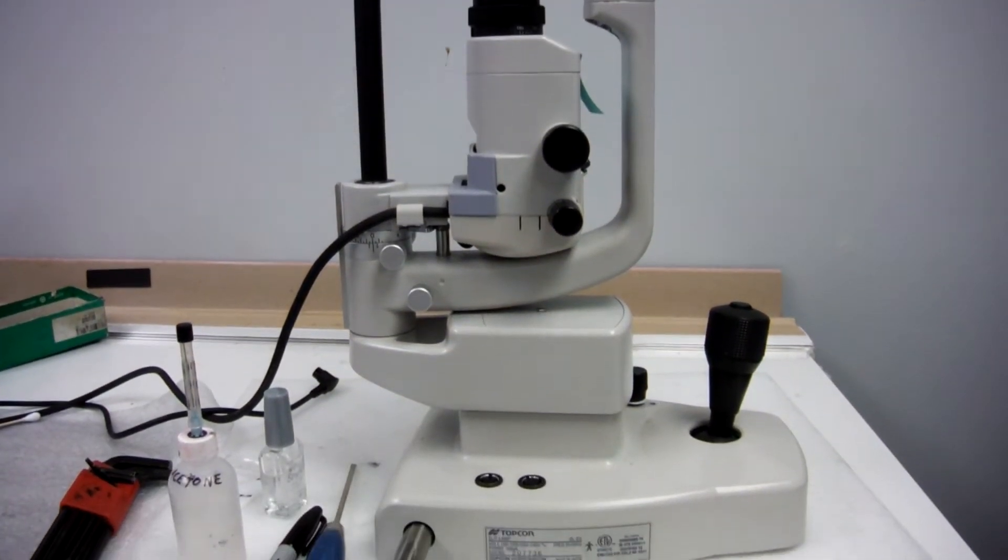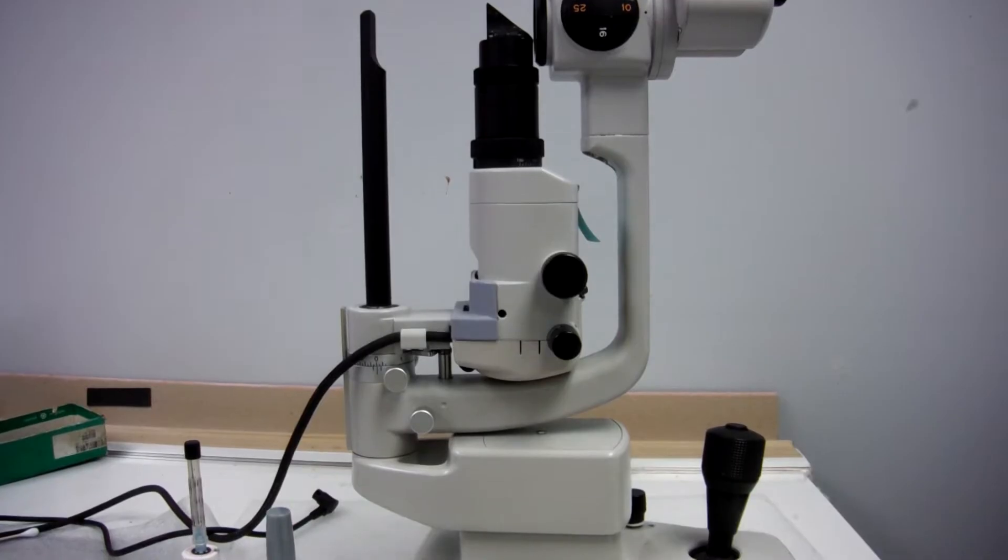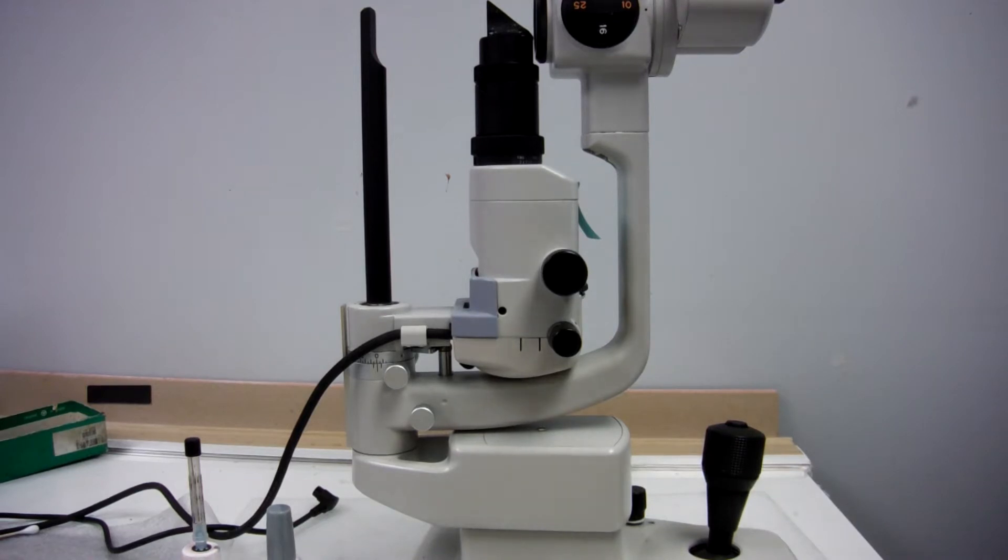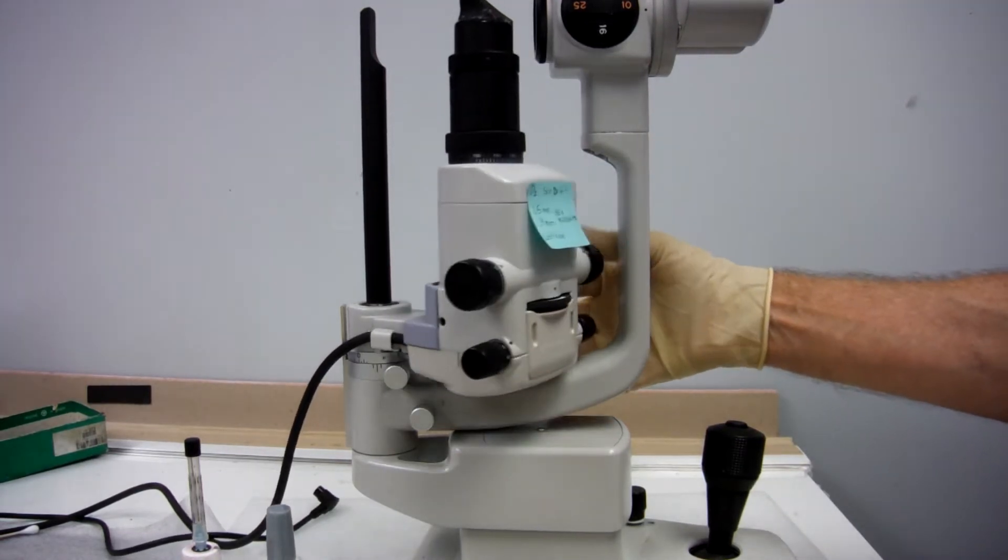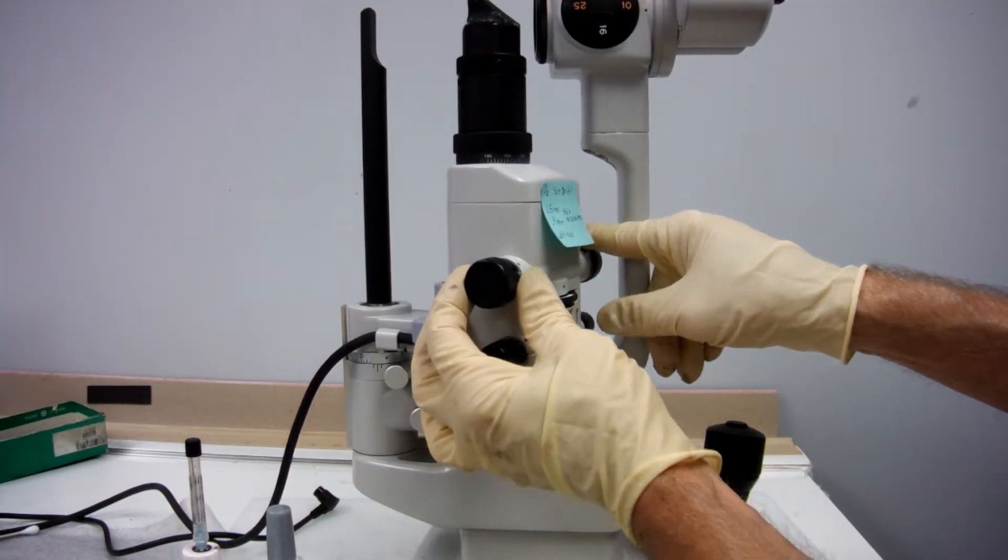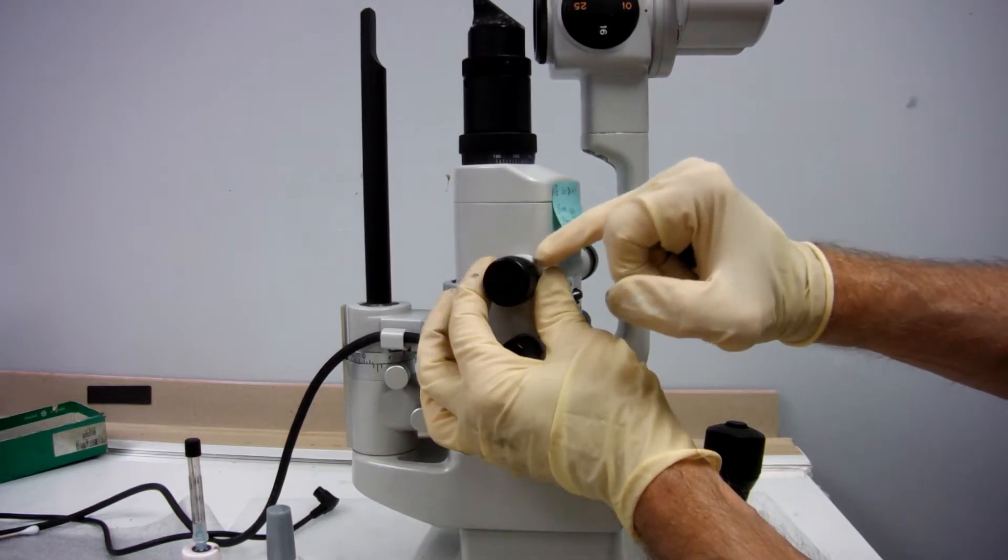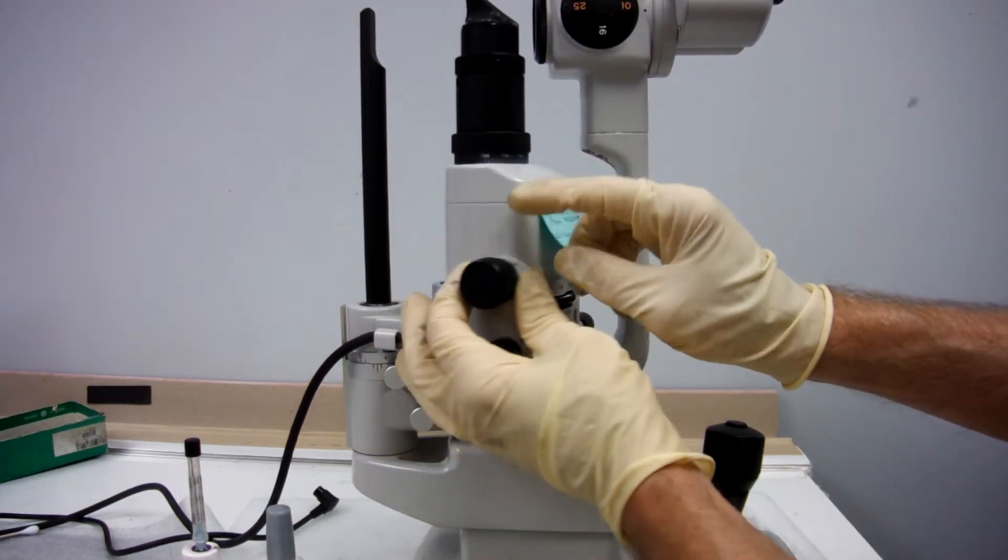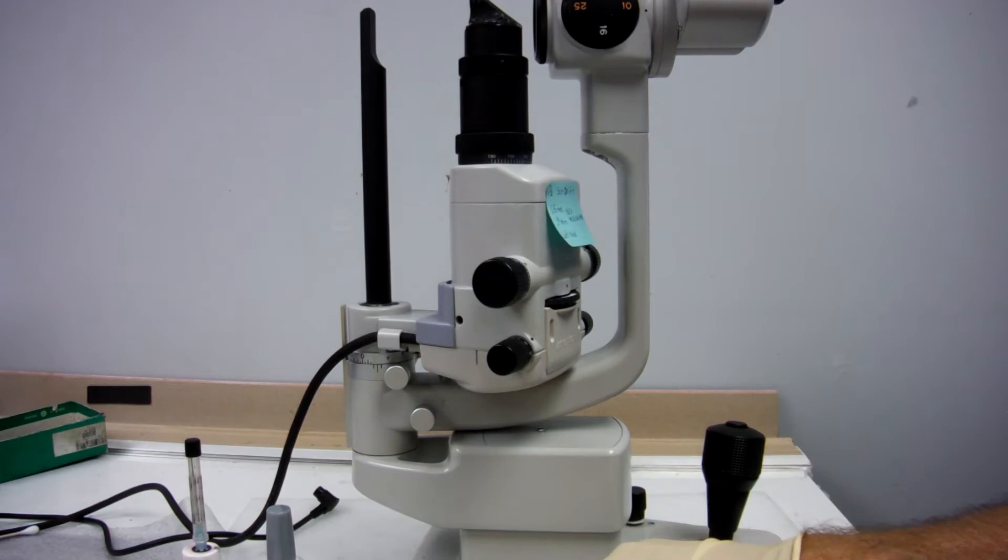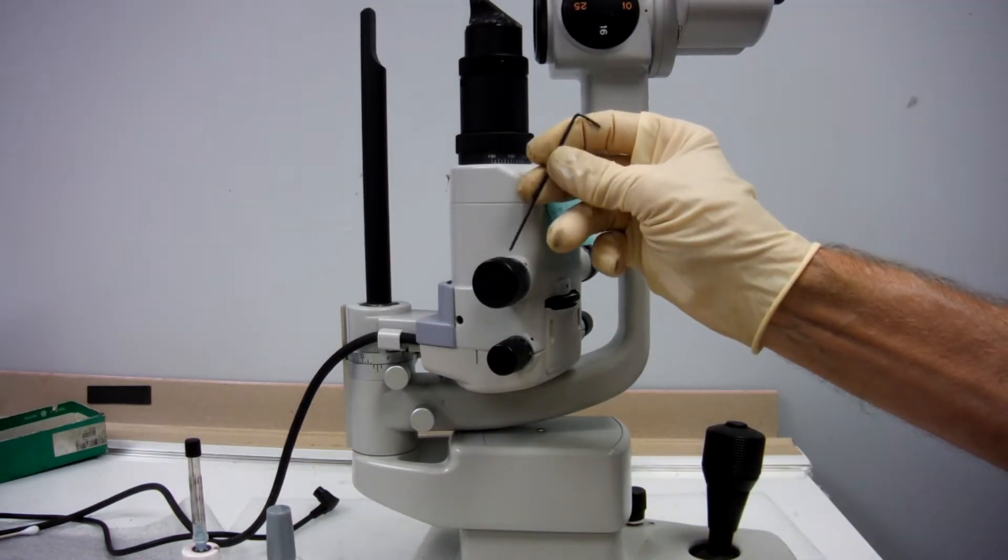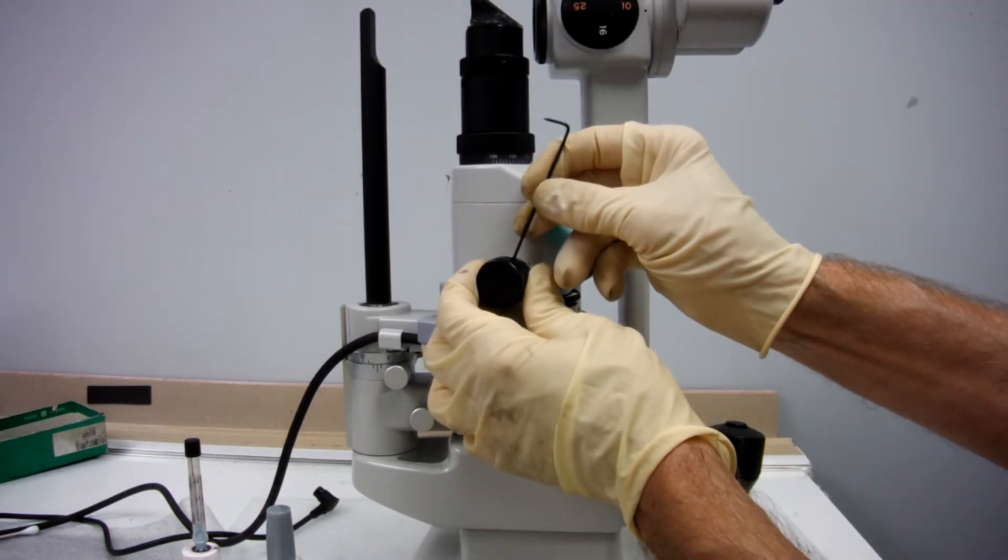On the D2 Slit Lamp, to tighten the drift of the slit, you would take off this left knob, right here, with a 1.5mm Allen.